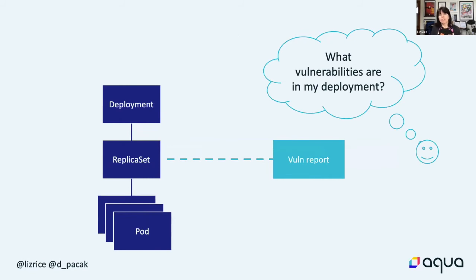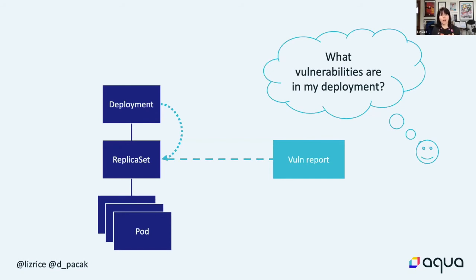Even if we're storing vulnerability reports per replica set, from Dave's point of view he's probably interested in querying at the deployment level. So we've made it easy to traverse the hierarchy so that you can make a query at the deployment level and it looks up the vulnerability information from the associated replica set. Over to Daniel to show us the hierarchy.